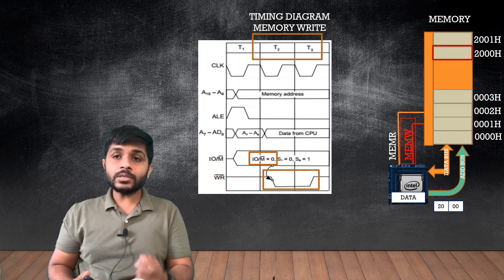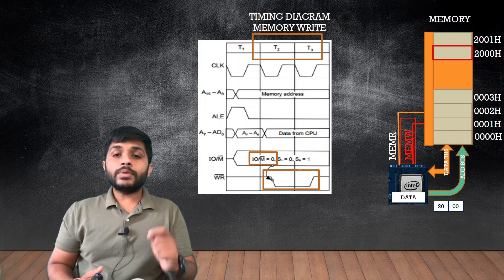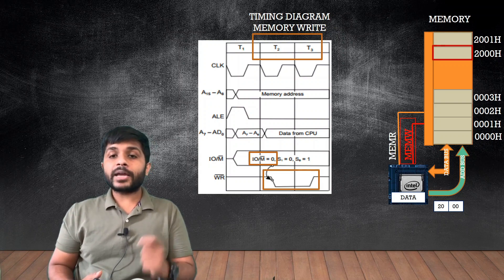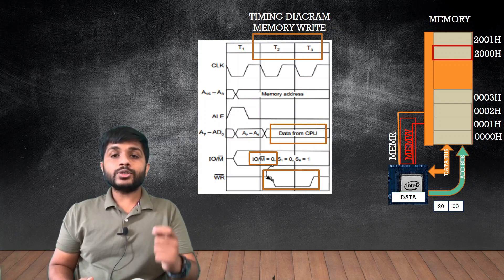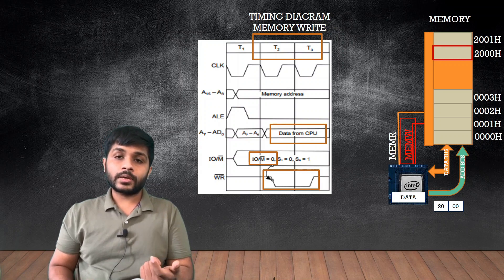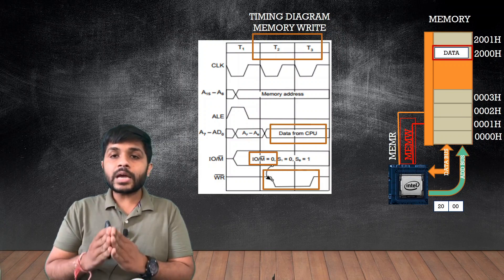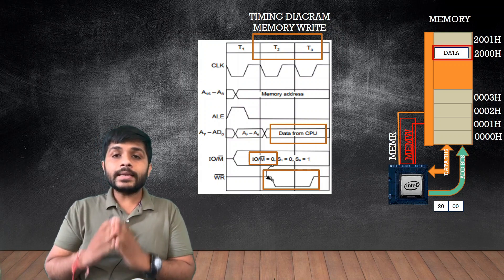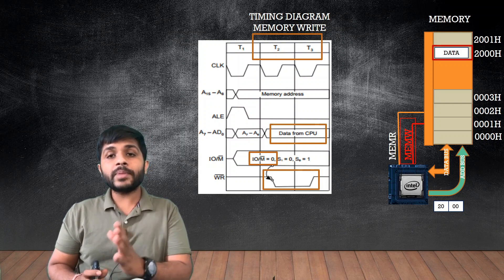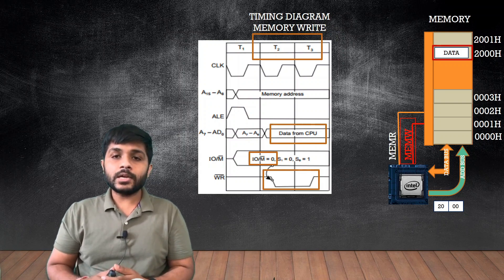When memory receives the memory write control signal, it understands that the processor wants to write data to the selected memory location — which is 2000h. So memory will wait for the data to be sent by the microprocessor. After some time the processor sends the data using the data bus to the selected location, and the data is stored at memory location 2000h. Using the timing diagram we can clearly see all the waveforms and understand the steps the microprocessor performs to complete the memory write machine cycle. I hope this concept is clear.